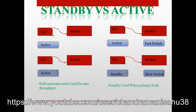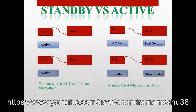Consider this: if you have two NIC cards, each with 1 Gbps speed, and both are active, your data transfer runs at 2 Gbps because both cards are in use for maximum throughput. But in active/standby mode, only one NIC is active, so you get only 1 Gbps. The standby NIC does not work unless the primary goes down.